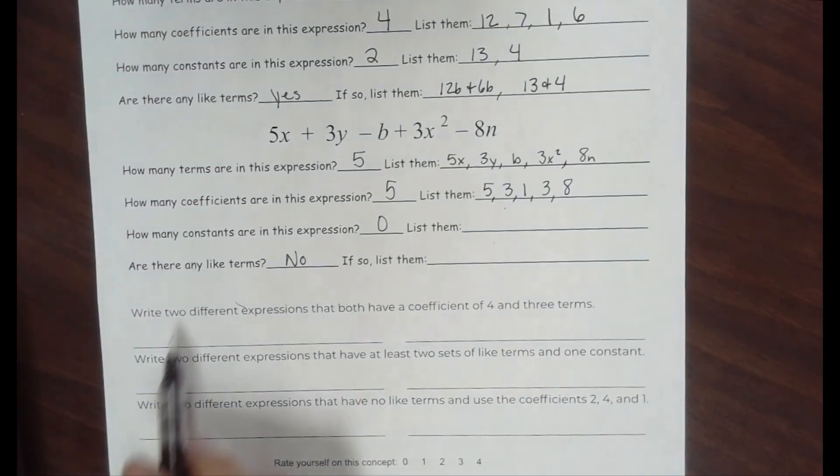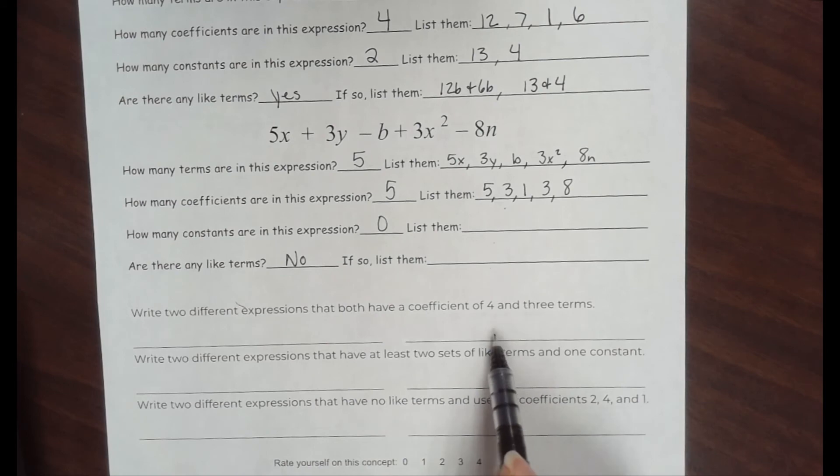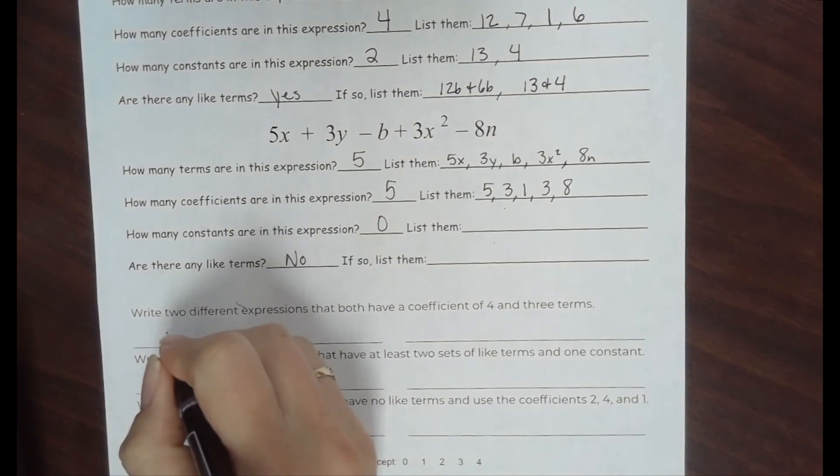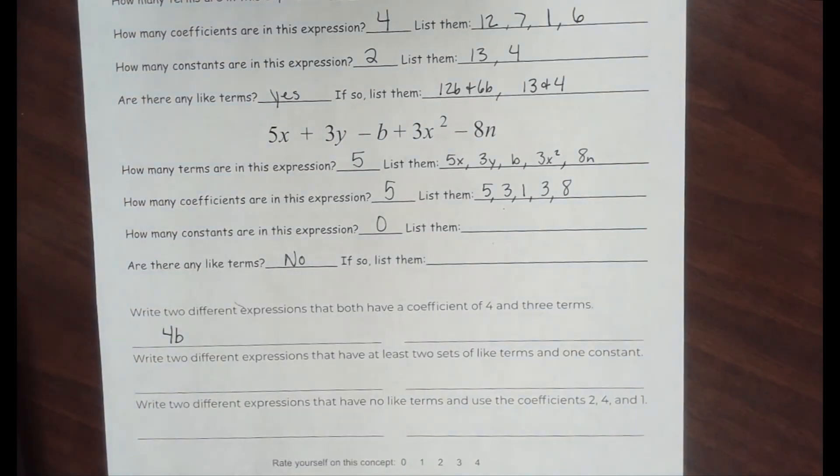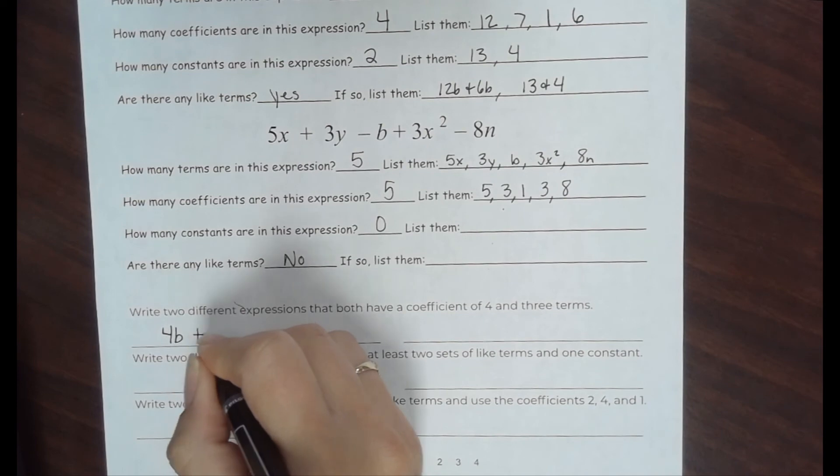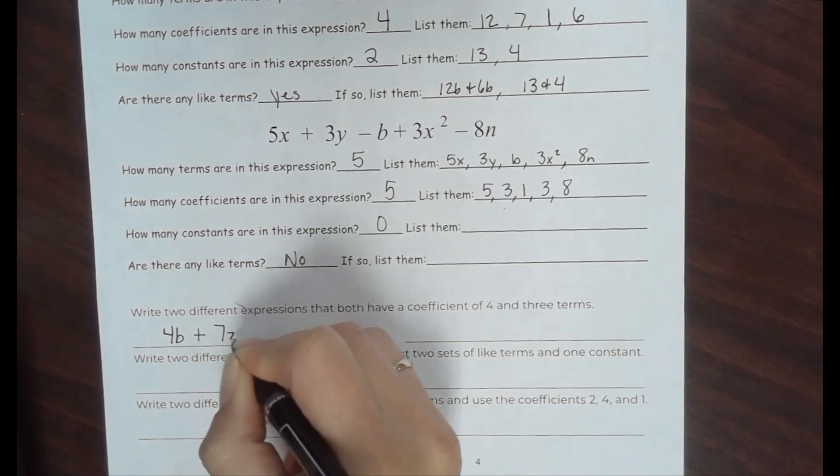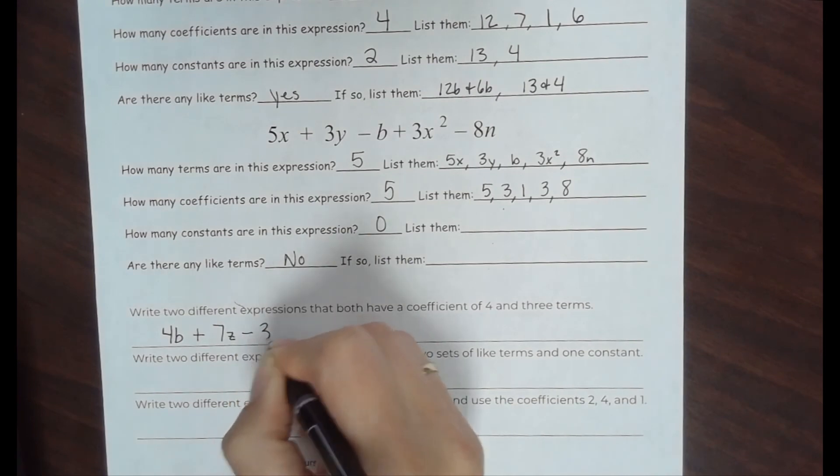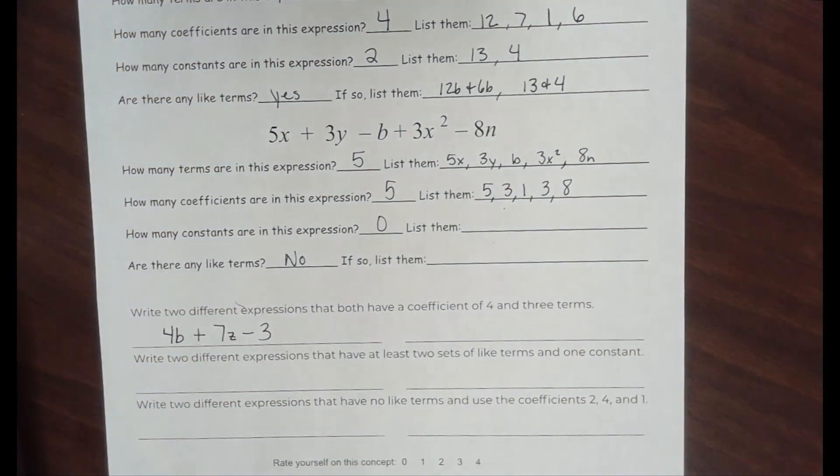Down here, it says, write two different expressions that both have a coefficient of 4 and 3 terms. I'm going to do one, you do the other one on your own. I need a coefficient of 4 and 3 terms. Coefficient of 4 means 4 times a variable, so I'm going to say 4b. That's only one term, so I can add anything else I want. How about I add 7z and minus 3. I have 3 things being separated by plus or minus signs, and I have something with a coefficient of 4 that satisfies everything it says there. Now, you write a different expression over here.